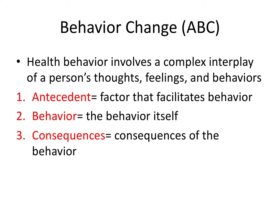The A stands for antecedent — that's the factor that facilitates the behavior. B stands for the behavior itself. And C stands for consequences, or the consequences of that behavior. For example, the antecedent could be food caught between your teeth. The behavior this causes is flossing to remove the food, and the positive consequence is relief because food is no longer caught between your teeth.